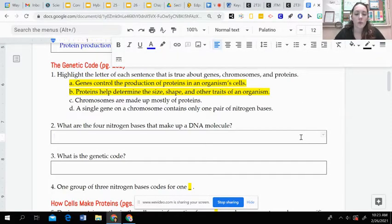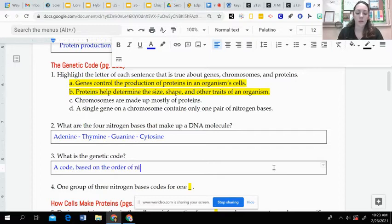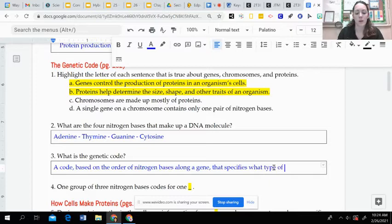Question two, what are the four nitrogen bases that make up a DNA molecule? It's adenine, thymine, guanine, and cytosine. And three, what is the genetic code? This is a code based on the order of nitrogen bases that are along a gene that specifies what type of protein will be produced.